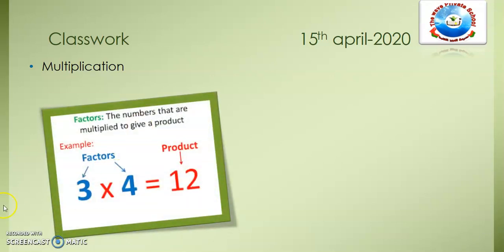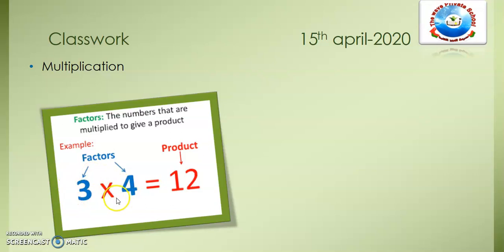I'm going to give you an introduction about multiplication, multiples, and factors. In picture number one you can see some numbers with their definitions. Factors are the numbers that are multiplied to give a product — they are the numbers we multiply together to find the product. For example, 3 multiplied by 4: these two are factors and the answer we get is called the product.